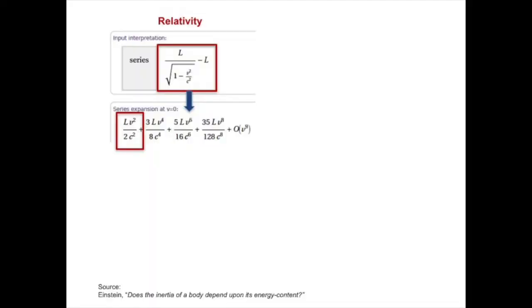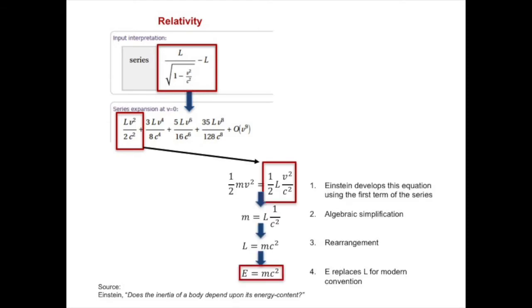Not only is Einstein's new equation easier to solve and use in experiments, with just a few more math steps, Einstein uses this cutoff equation to create the famous E equals mc squared.